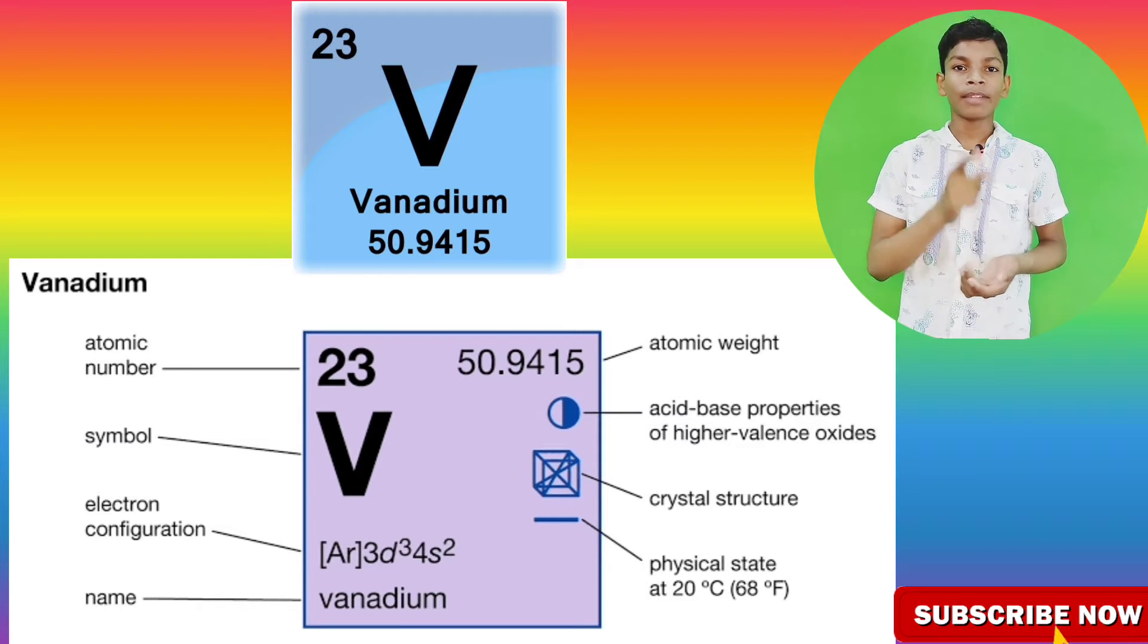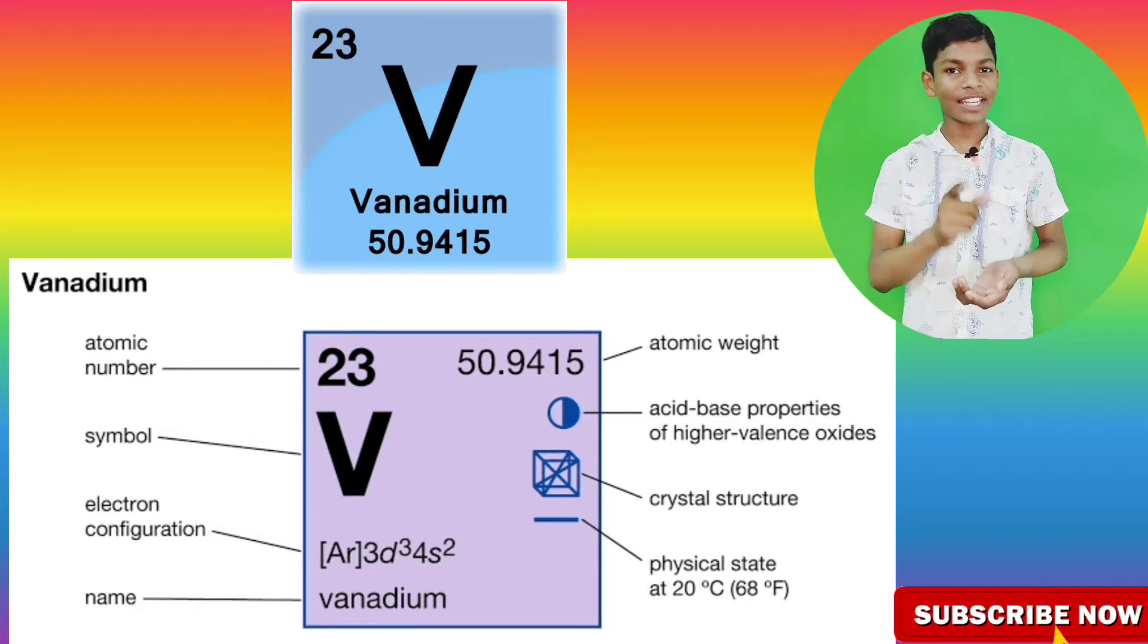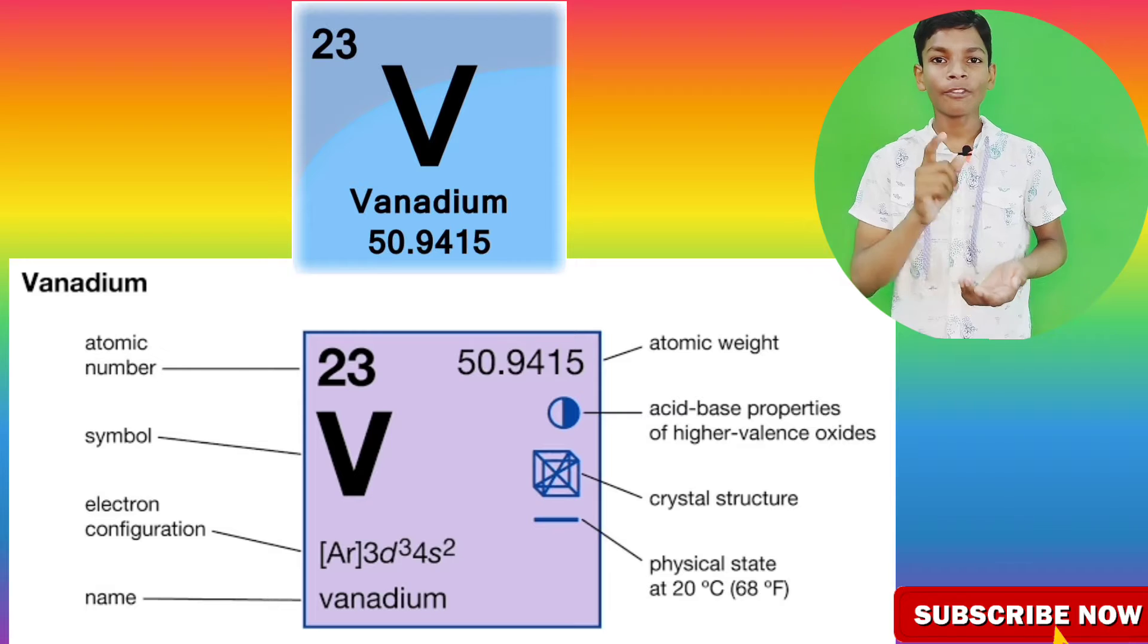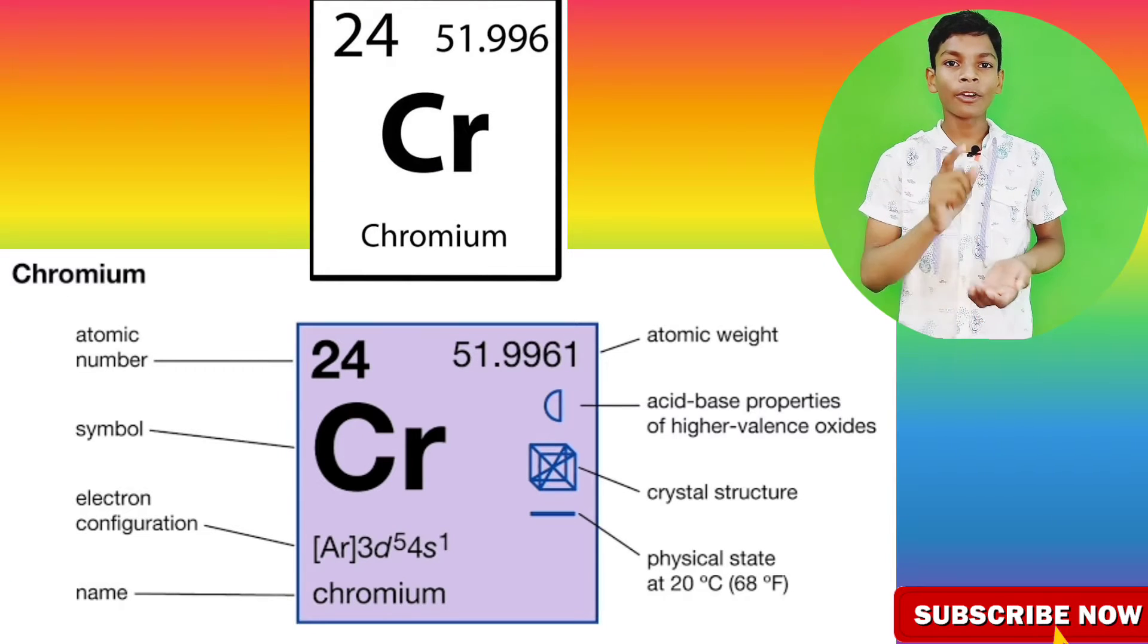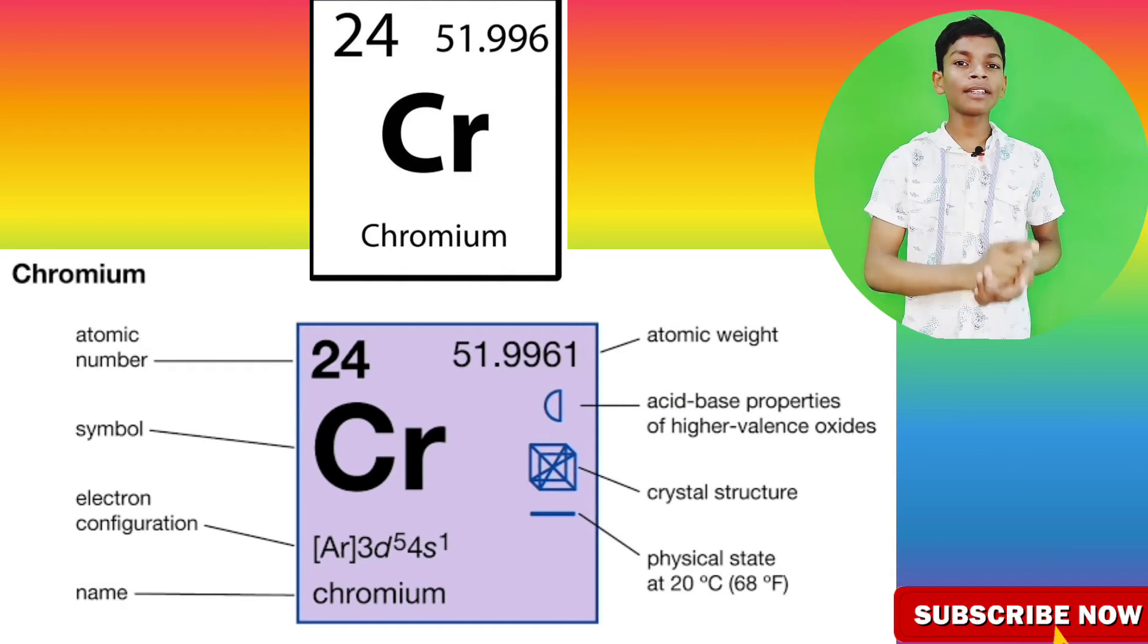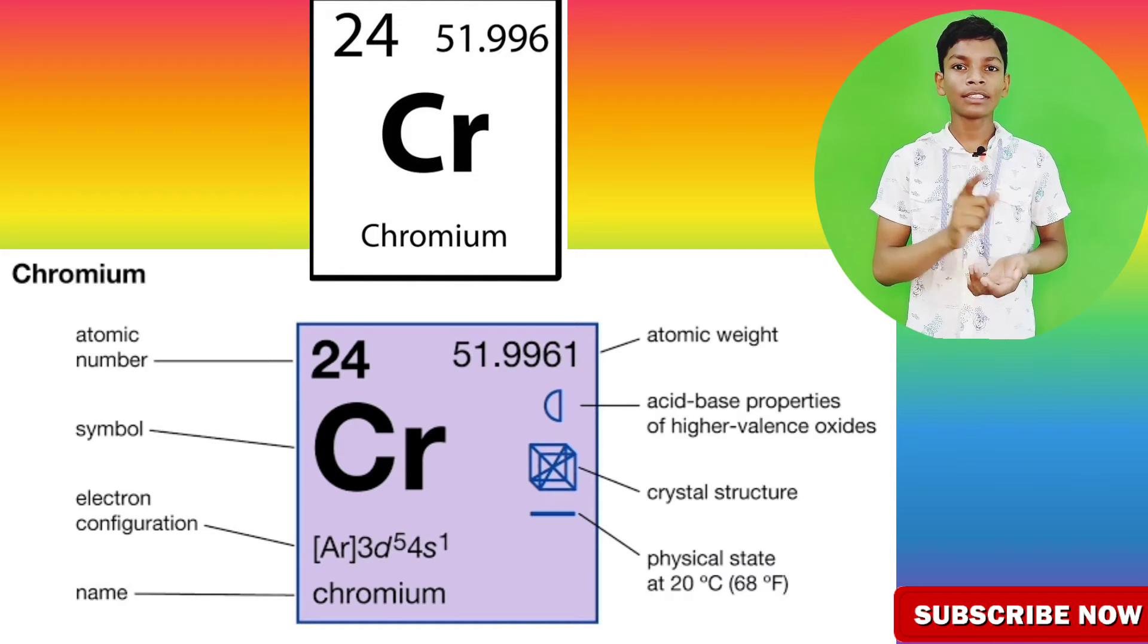Vanadium: atomic number 23 and symbol V. Chromium: atomic number 24 and symbol Cr.